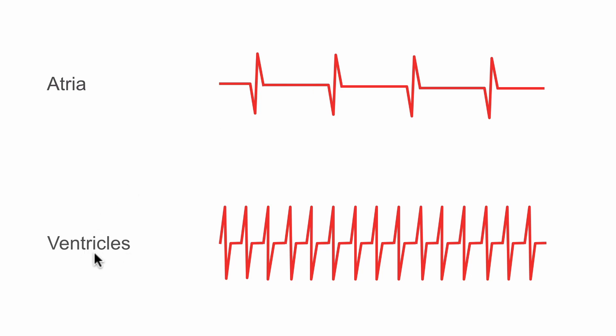But here, interestingly, on the ventricular lead, we're picking up multiple depolarizations, some very fast activity coming from the ventricle itself. So we're getting two bits of information to help us ascertain what that rhythm is.